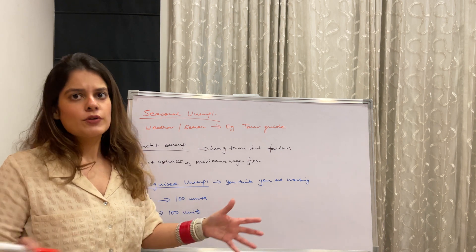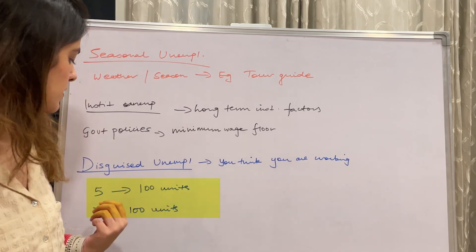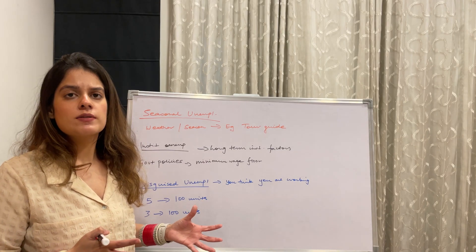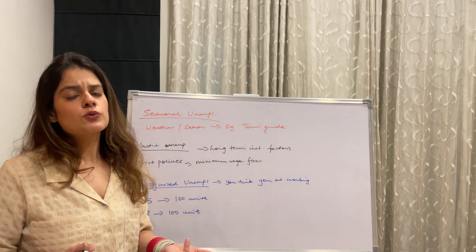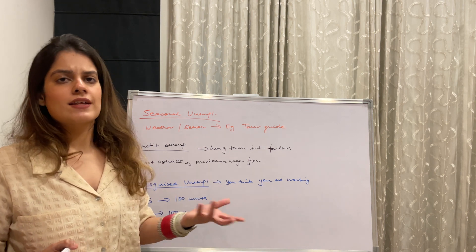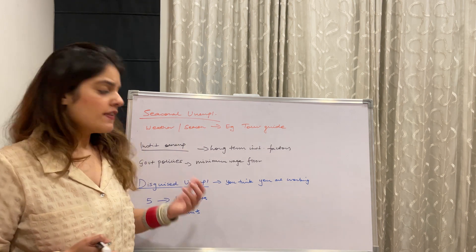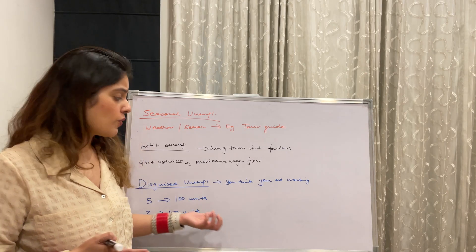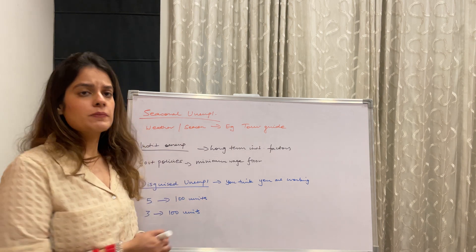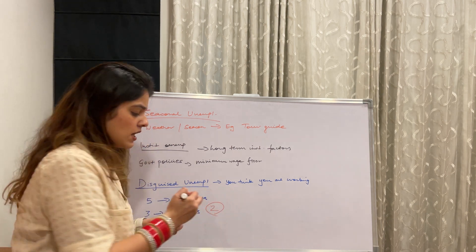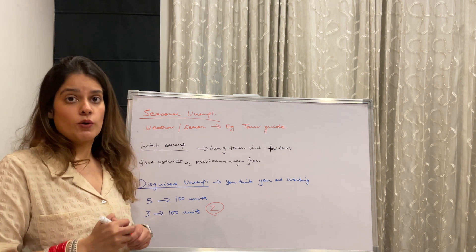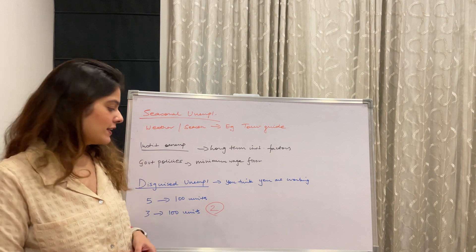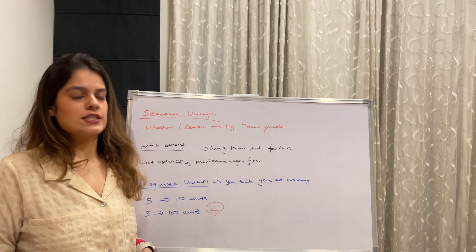Lastly, disguised unemployment is when you think you're working but you're not really contributing. For example, five brothers working on a piece of land produce 100 units of output. If two brothers leave for the city, the remaining three still produce 100 units — there is no fall in output. This means those two brothers who left were disguisedly unemployed; they thought they were working, but their absence had no effect on output.